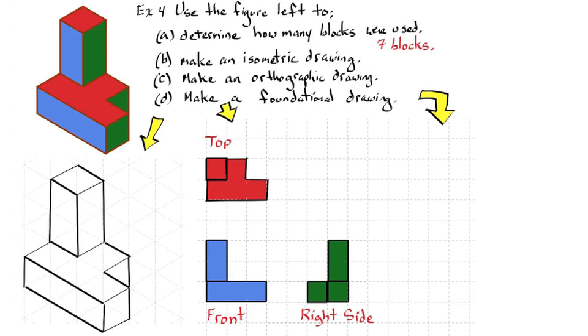Now we're ready to do the foundational drawing. I'm just going to take the same top view that we did for the orthographic drawing and just copy it. Same thing. But instead of having the other two views, I'm going to label the heights on each section. So one and three are the heights for the foundational. And that's it.